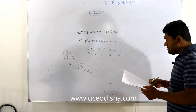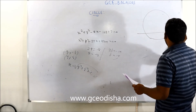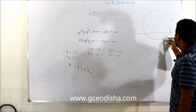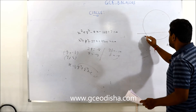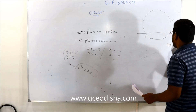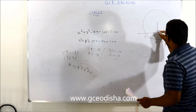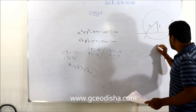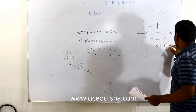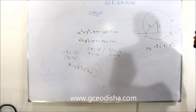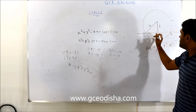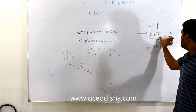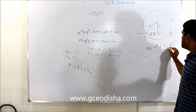Another question asks for the length of the intercept on a circle. Once you find the radius a and the perpendicular distance d, the length AB = 2√(a²-d²). This follows from the Pythagorean theorem: AO = √(a²-d²) and since the perpendicular bisects the chord, AB = 2·AO = 2√(a²-d²).